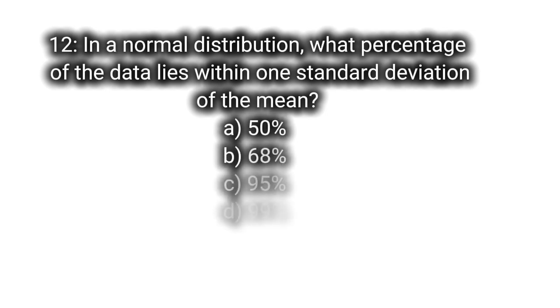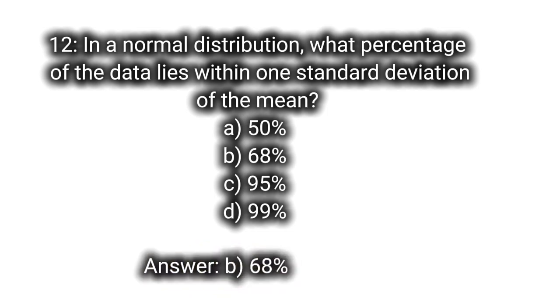Q12: In a normal distribution, what percentage of the data lies within one standard deviation of the mean? A. 50%, B. 68%, C. 95%, D. 99%. Answer: B. 68%.